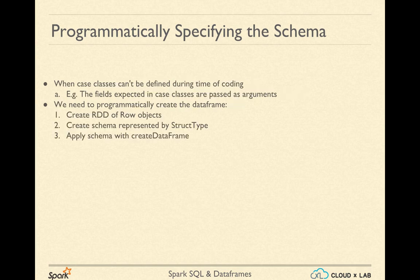First, create an RDD of rows from the original RDD. Then, create the schema represented by a StructType matching the structure of rows in the RDD created in the previous step. And then, apply the schema to the RDD of rows via the createDataFrame method provided by Spark session.